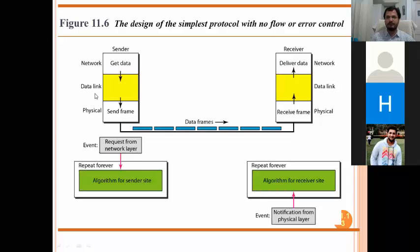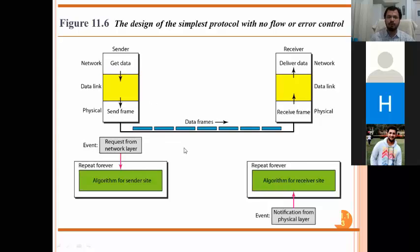In the data link layer we are performing flow control between one host and the immediately connected host. For example, if in our system there are two nodes with switches and routers in between, the first node is connected with the first switch, so there is a need of flow control. Data link layer is basically talking about host to host which are immediately connected with each other.